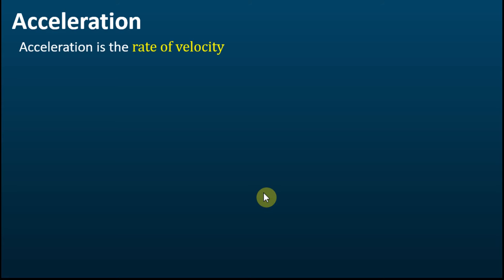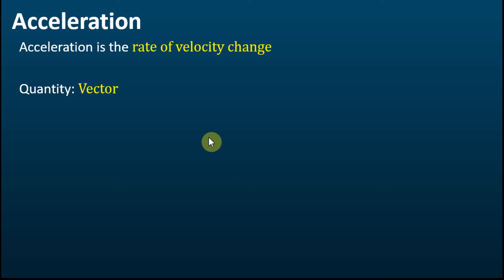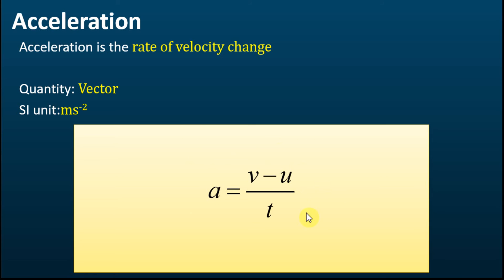Acceleration is defined as the rate of velocity change — that is, how fast the velocity changes, or how much velocity changes in a period of time, such as one second or one minute. Acceleration is a vector quantity: it has magnitude and direction, so we have positive acceleration and negative acceleration. Negative acceleration means accelerating in the negative direction. The SI unit of acceleration is meters per second per second.